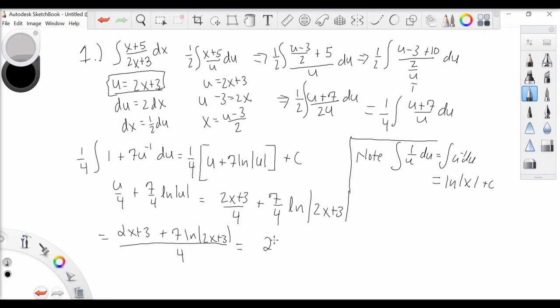And we get 2x plus 3 plus ln of 2x plus 3 raised to the power 7, all over 4.